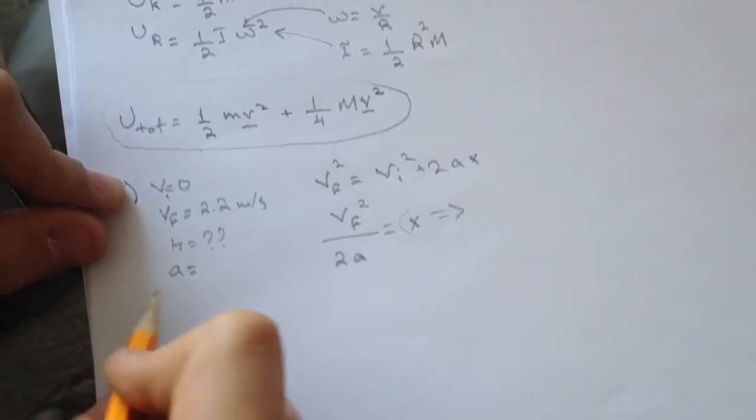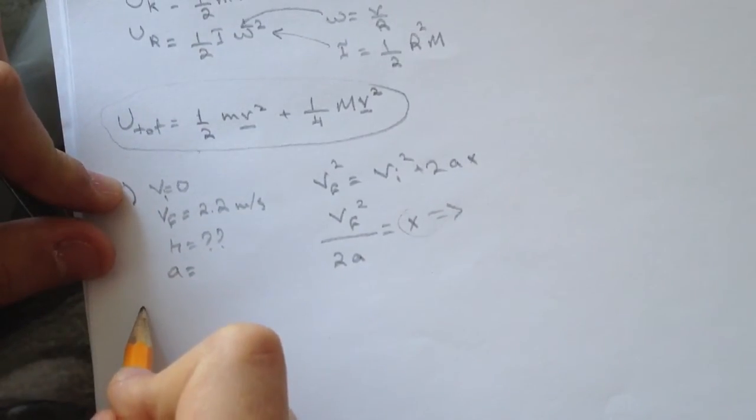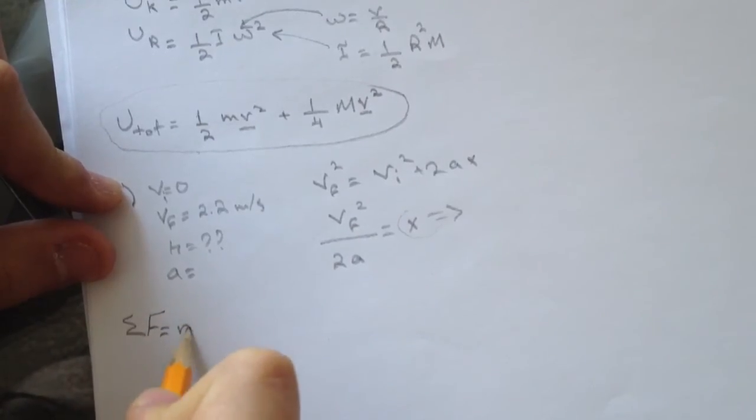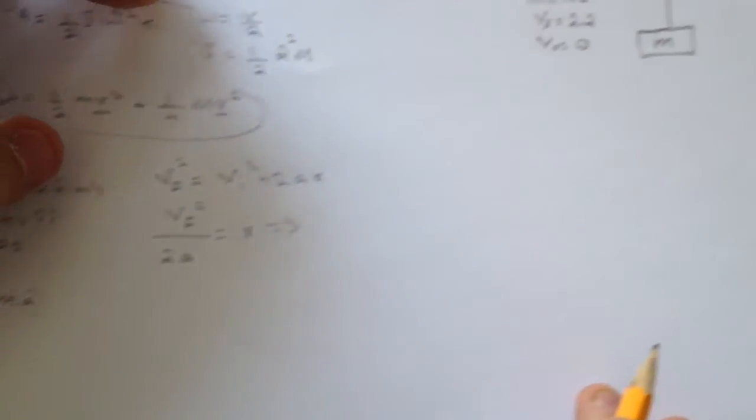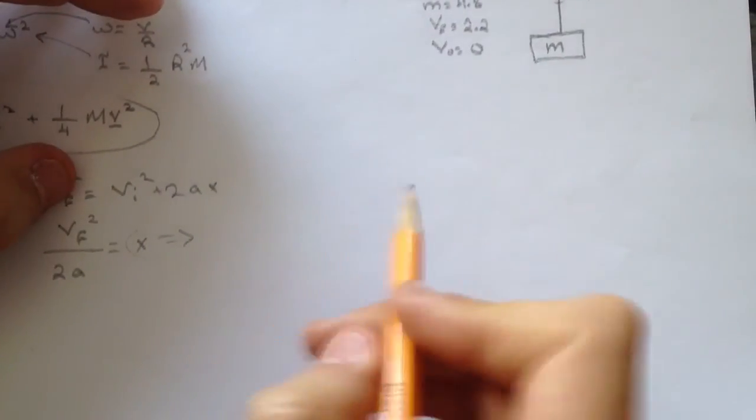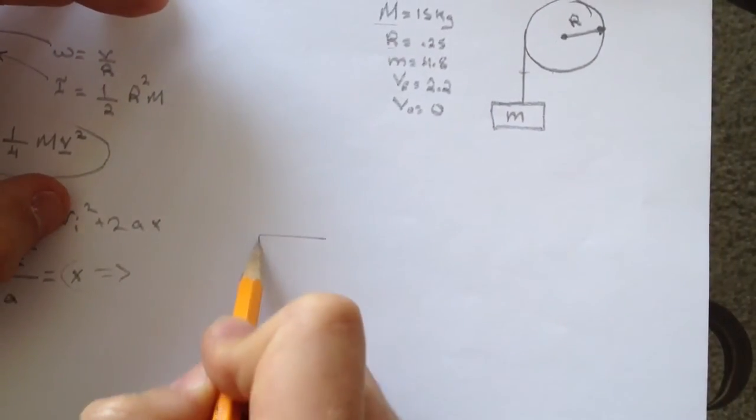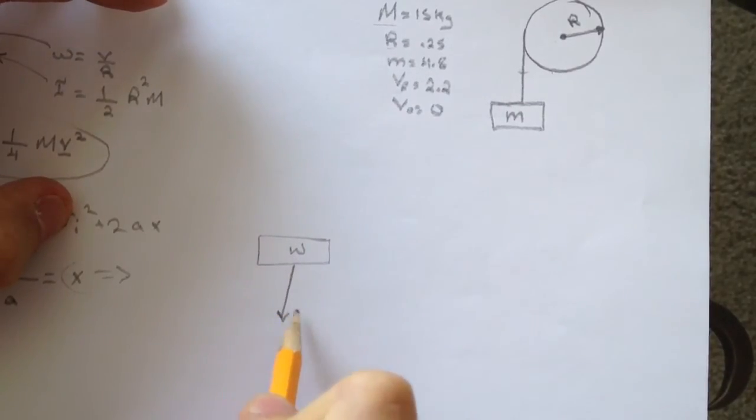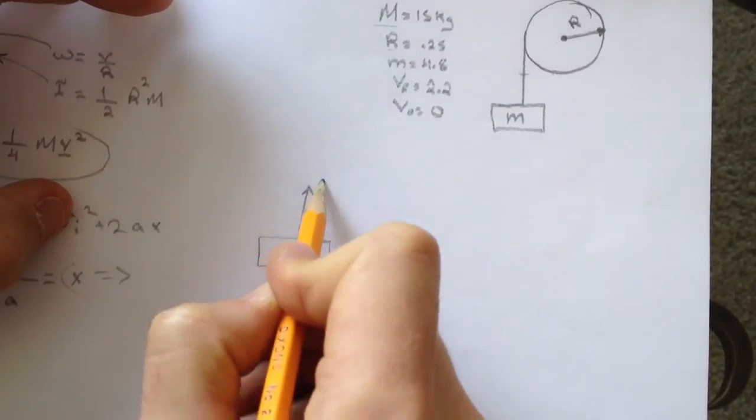We're going to use Newton's law: sum of forces equals ma. If we draw a free body diagram for the weight, there's mg going down from gravity and there's the tension from the disc.